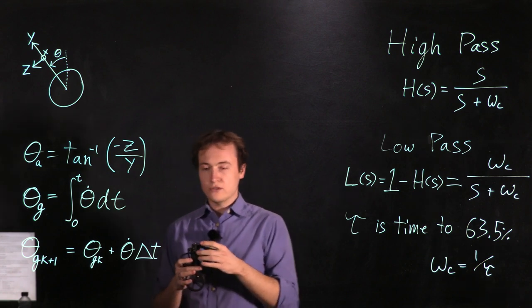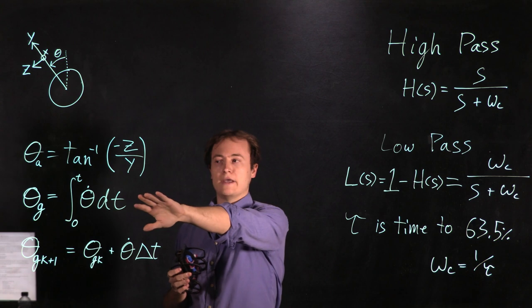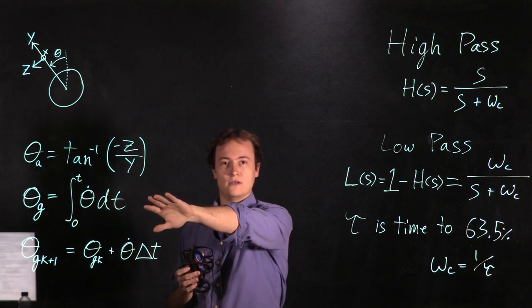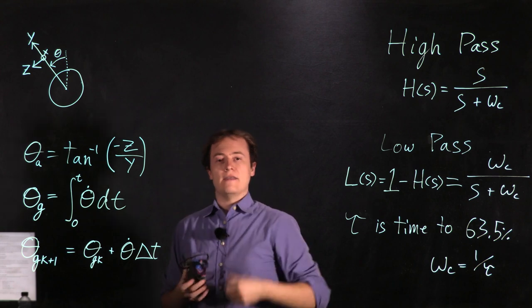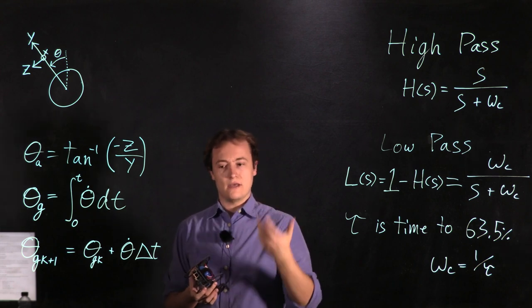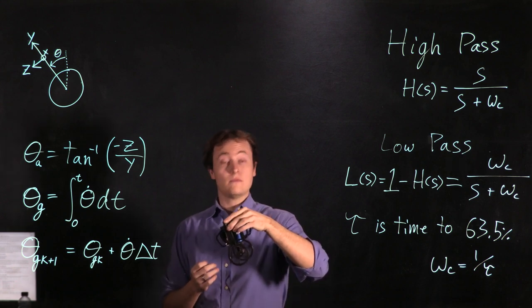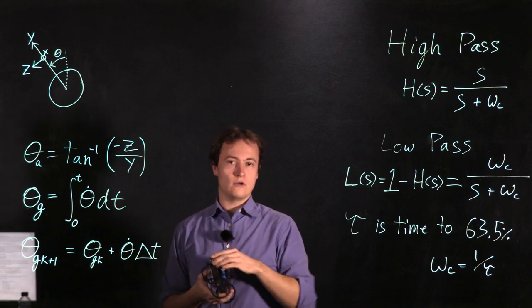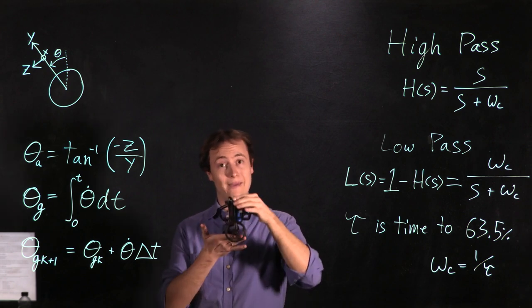So what we can do is somehow combine the high frequency accuracy of theta g with the low frequency accuracy of theta a and then between the two of them actually find a much better estimate for the angle of your theta. Good enough that we can actually close a feedback loop around this angle and balance the MIP.